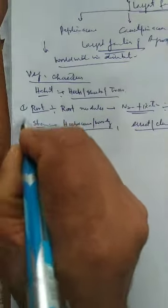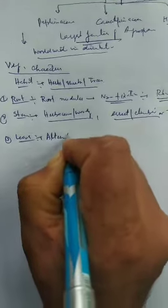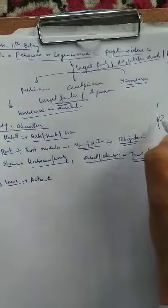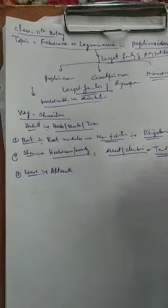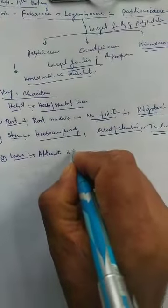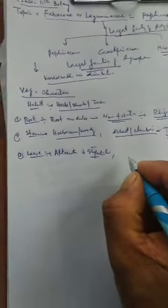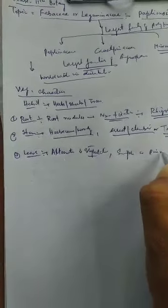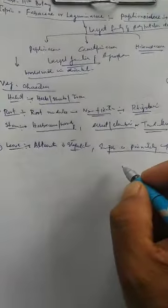The third feature is leaves. The arrangement of leaves is alternate — at one node we have one leaf, and on the alternate side another leaf at another node. The leaves are alternate and stipulate, containing a small leaf-like structure called a stipule. Leaves may be simple or pinnately compound.